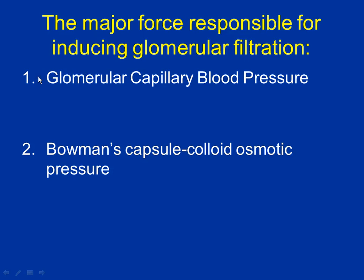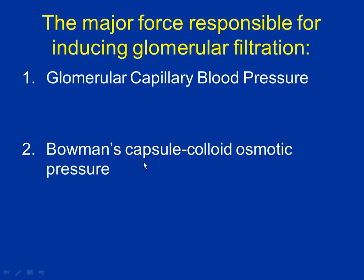Next is Bowman's capsule colloid osmotic pressure — colloids referring to proteins and large substances. Should proteins be able to slide through the glomerulus into Bowman's capsule? No. So what value should this always have in a healthy person? Zero. If somebody were sick and proteins were leaking through, those proteins are pulling things out of the blood — that would be a negative value. Both of these forces take things out of the blood: one pushes things out, one pulls things out. Both are negative values.